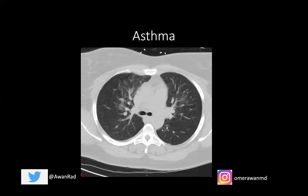Asthma typically presents with dyspnea, tachypnea, and wheezing. The key feature of asthma is that it's a reversible form of airway obstruction, meaning that you have air trapping in the lung, but with bronchodilator therapy it can be reversed.